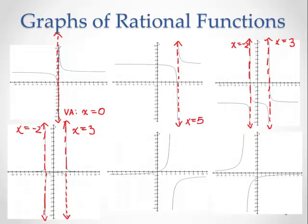Moving to the next graph: it looks like there's a vertical asymptote at x equals 3, where the graph jumps from one place to another. For the last graph, the vertical asymptote appears to be at x equals negative 3.